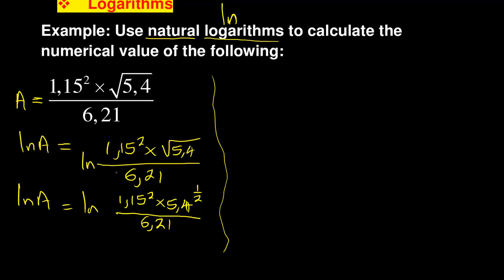Using the laws, ln A equals - now introducing ln on the right hand side - ln 1.15 squared. If it's multiplying, in ln you introduce plus. Then ln 5.4 to the power half. When it's dividing, you separate, minus ln 6.21.